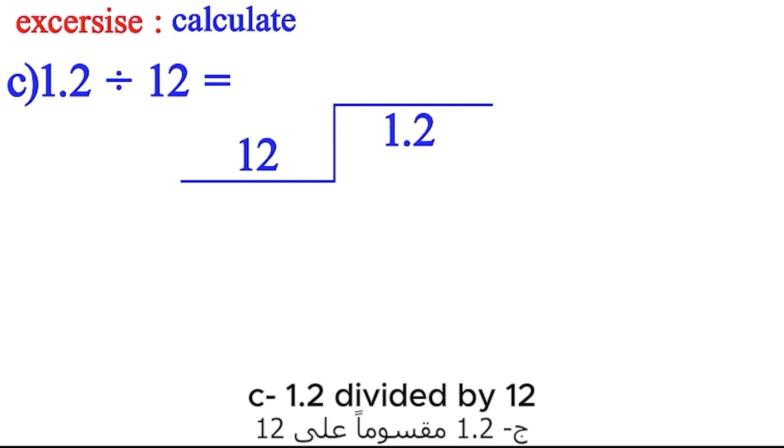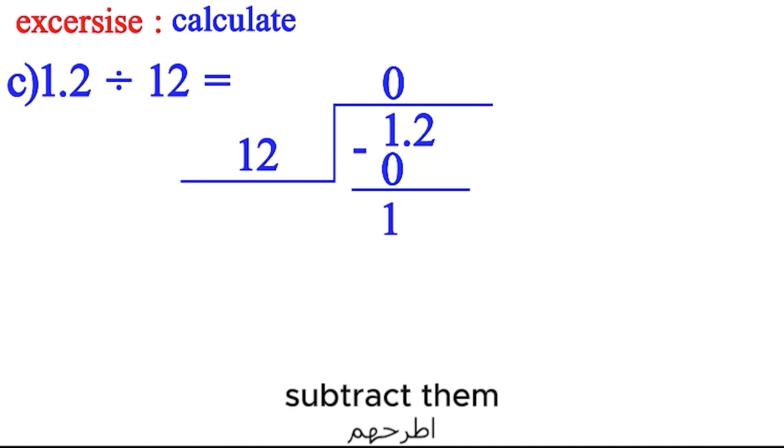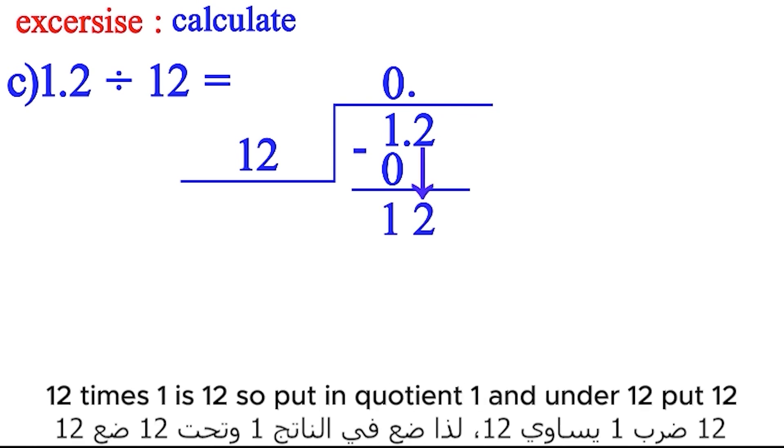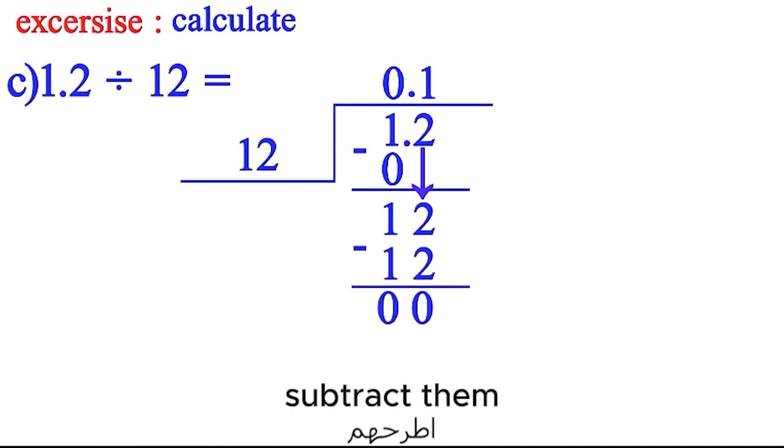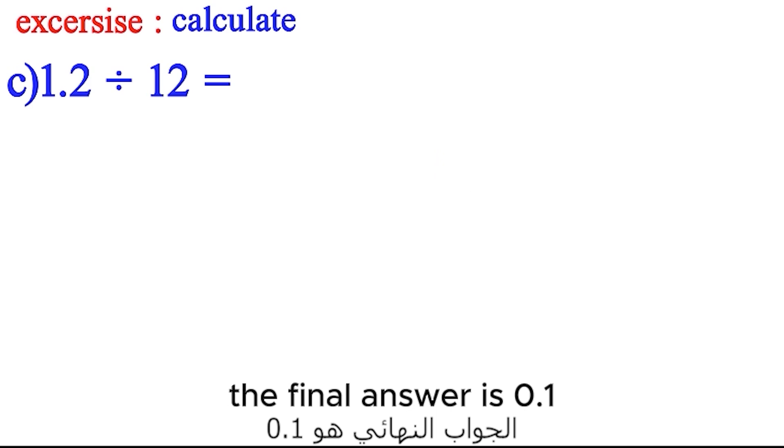C) 1.2 divided by 12. 1 times 0 is 0, so put 0 and under 1 put 0. Subtract them. Put dot. Bring down 2. 12 times 1 is 12, so put in the quotient 1 and under 12 put 12. Subtract them. The remainder is 0, so the division ends. The final answer is 0.1.